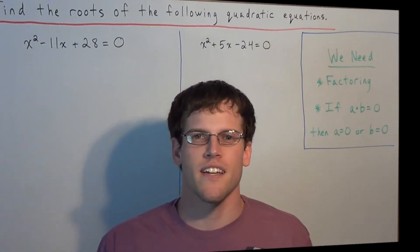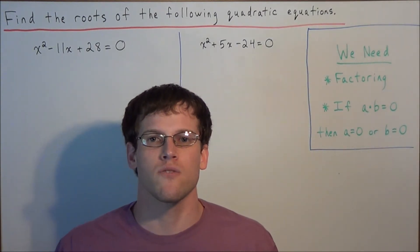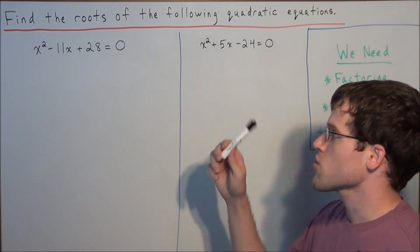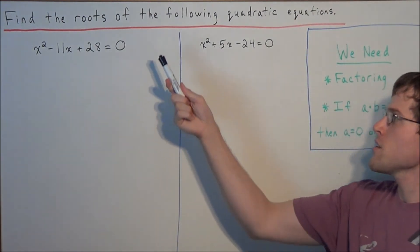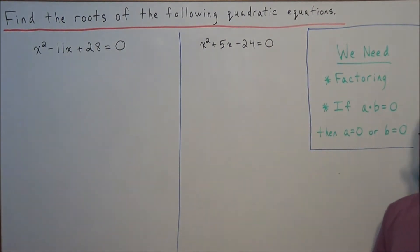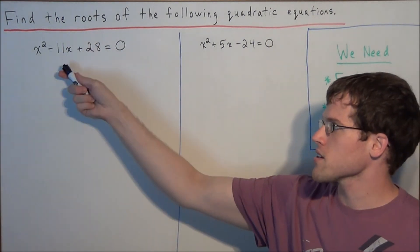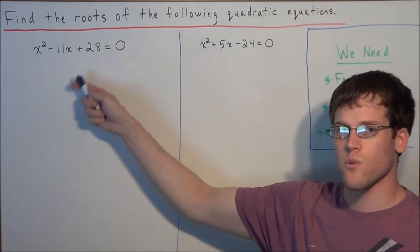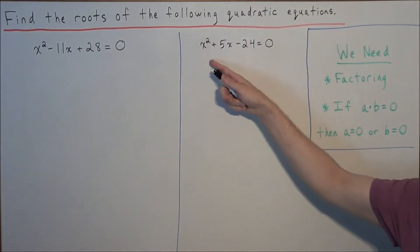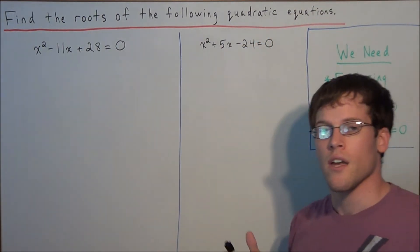Hi, my name is Vincent, and today I want to take a look at finding the roots of a quadratic equation. So we have: find the roots of the following quadratic equations, and we're looking at x squared minus 11x plus 28 equals zero, and we have x squared plus 5x minus 24 equals zero.